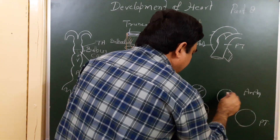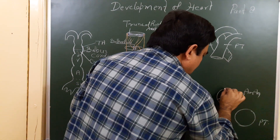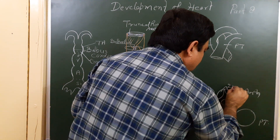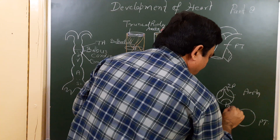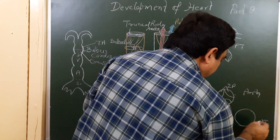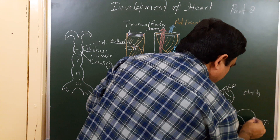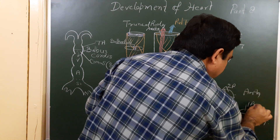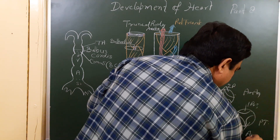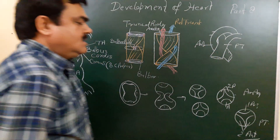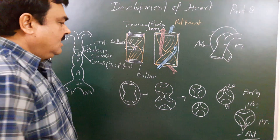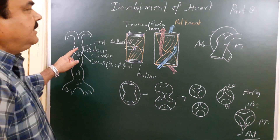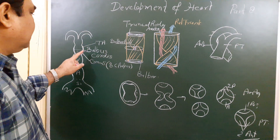In the aorta, the valves are two posterior valves and one anterior valve. In the pulmonary trunk, there are two anterior valves and one posterior valve — this is one posterior and two anterior. Similar valves are formed. So this is all about the fate of the bulbus cordis. Thank you.